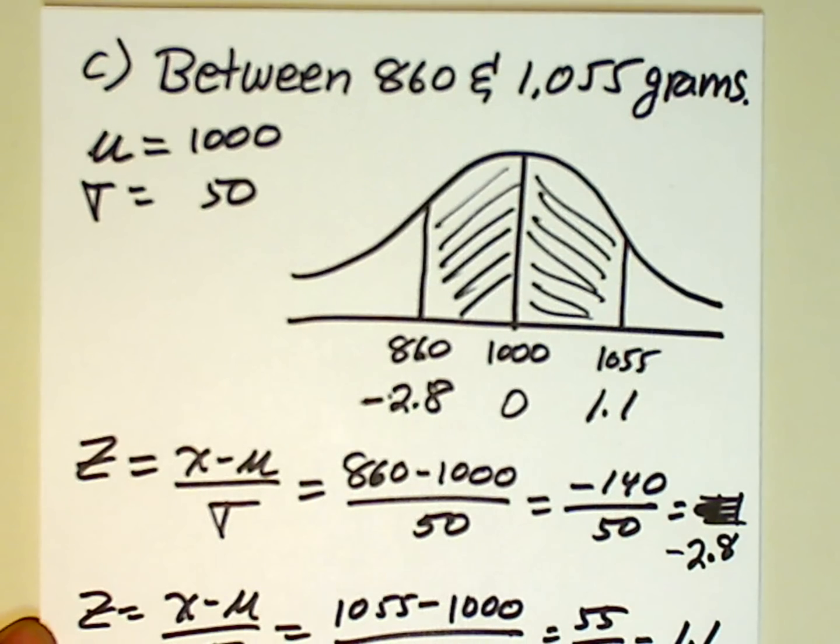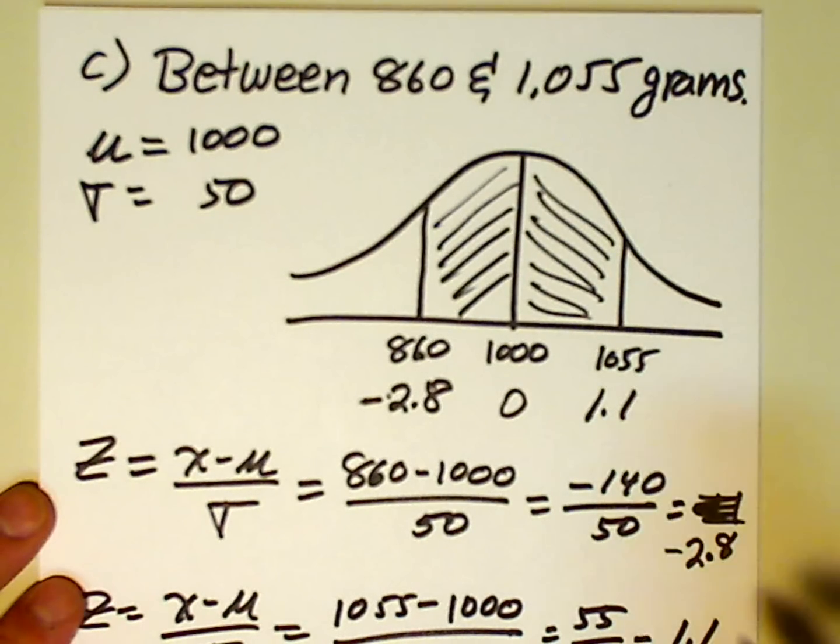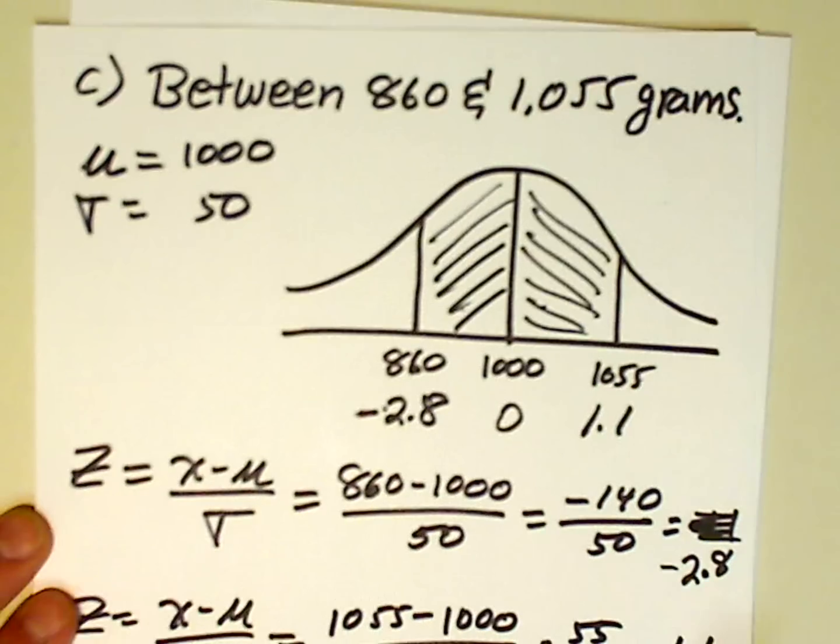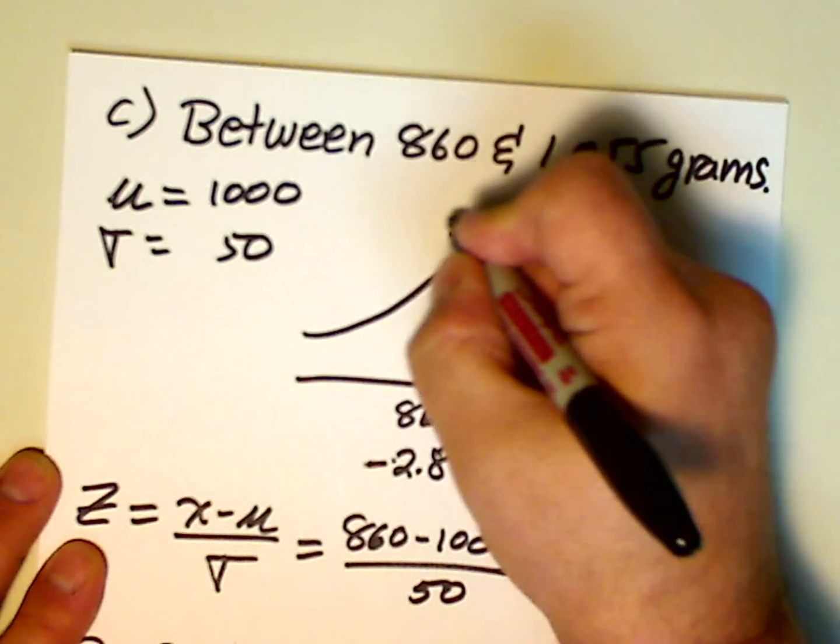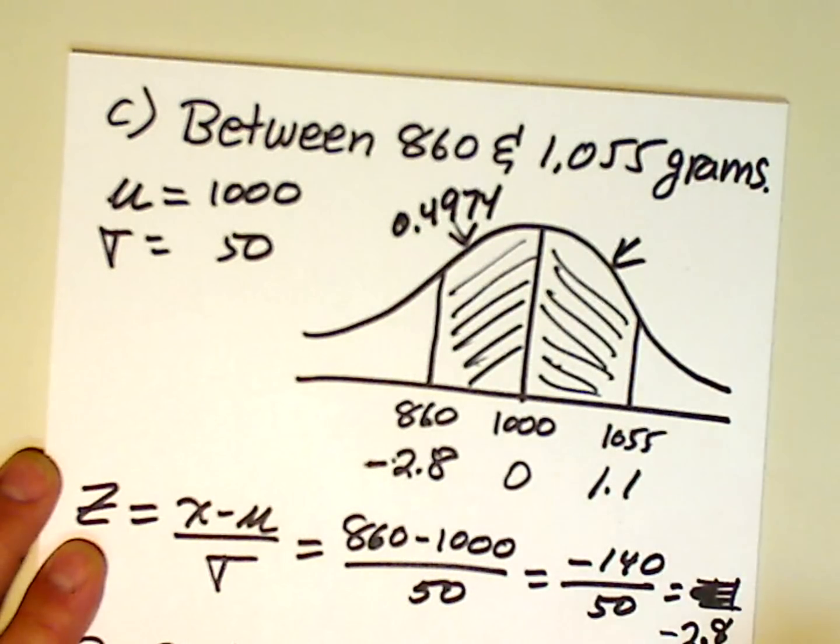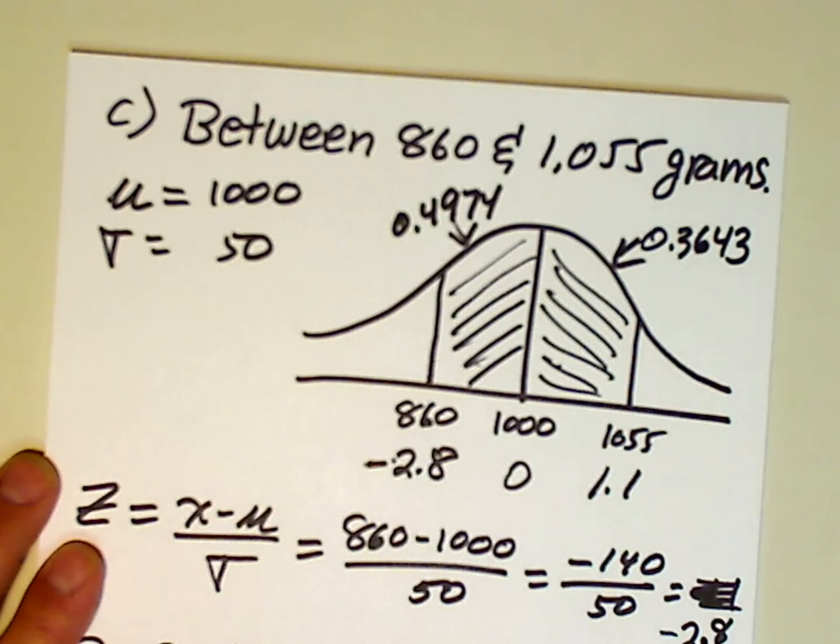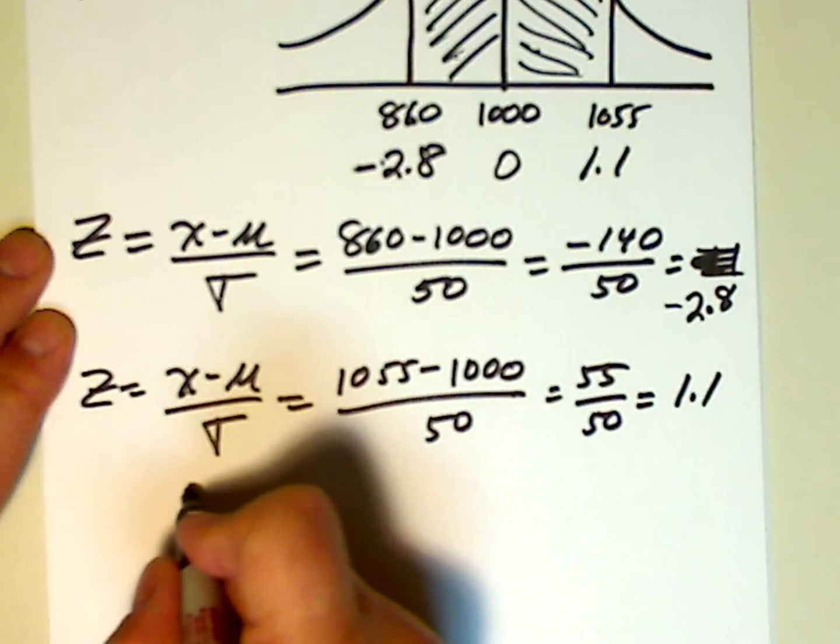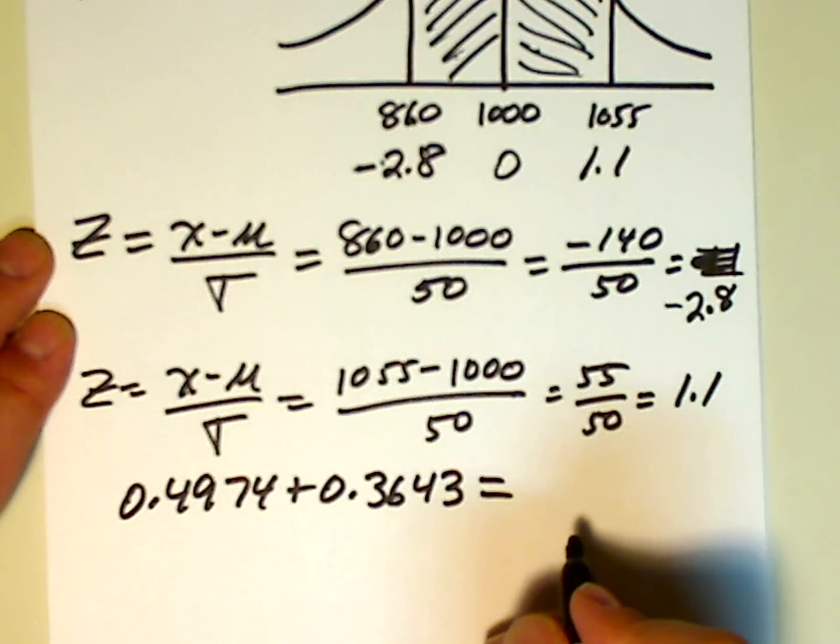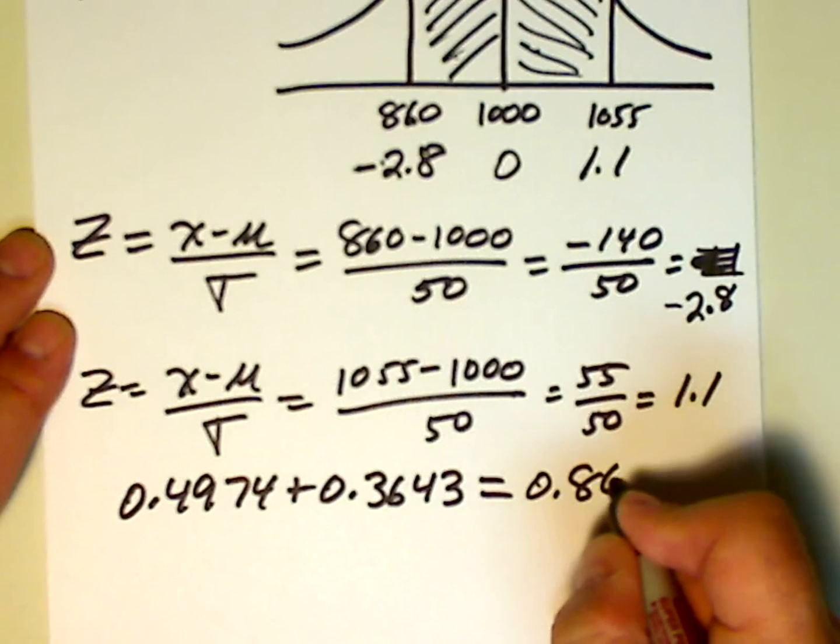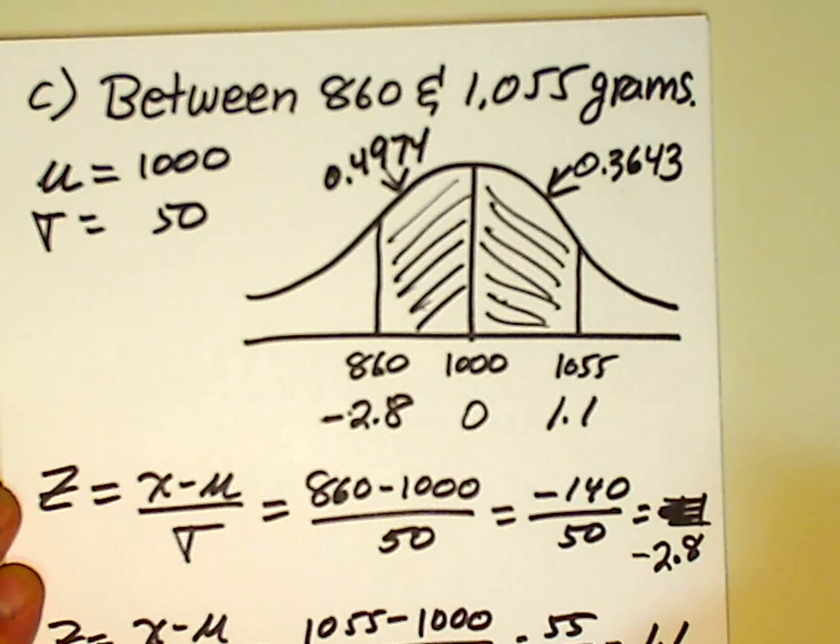So, this question asks, what's the probability, or what percentage of cans we'll have between 860 and 1055 grams? Well, that's just the sum of these two areas. So, let's sum these areas. If you recall, this area to the left of the mean is 0.4974. And this area here to the right is 0.3643. So, the total area is 0.4974 plus 0.3643. And if we add those up, that comes to 0.8617. So, that's the total area from 860 to 1055 is 0.8617.